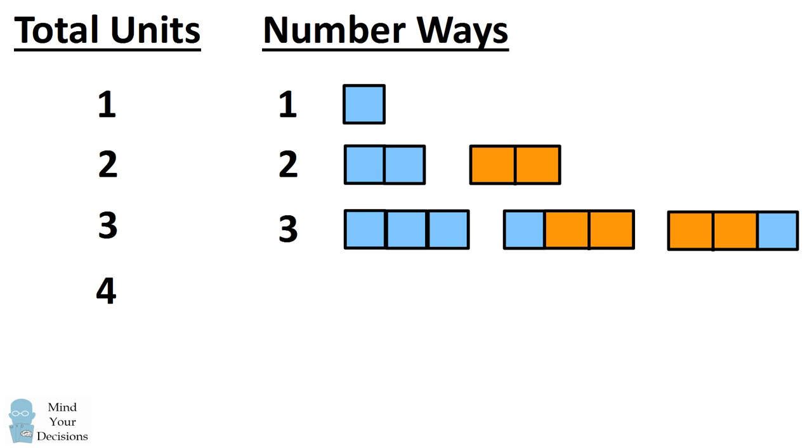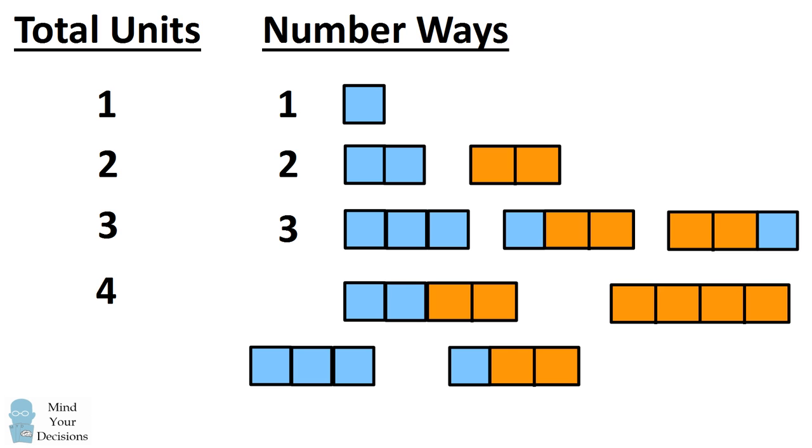What about four units of metrical beat? We could copy the number of ways that we compose two units of metrical beat, and then put a long syllable at the end. We can also copy the number of ways that we make three units of metrical beat, and add a short syllable at the end of each of these. In total, there are five ways we can make four units of metrical beat. And this is because five is equal to two plus three.